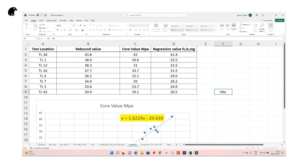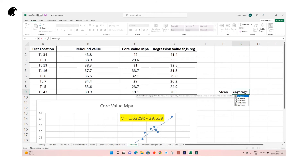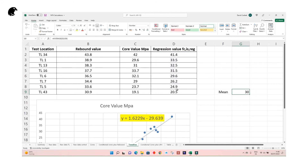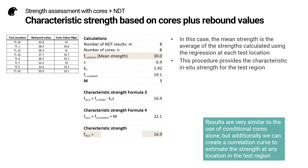We can also proceed to calculate the mean of these strength estimates, which we will need for the next step. The characteristic strength of the test region is calculated using the same two equations we used in part 1 for the core tests only. The difference this time is that the mean strength is based on the strengths calculated using the regression equation, and the standard deviation also takes this into account. The result is similar to that obtained using conditional coring, but now we can also create a correlation curve to estimate the strength at any location in the test region.